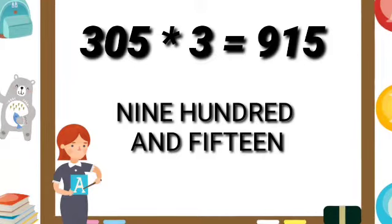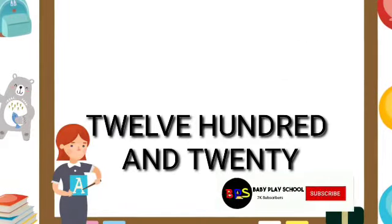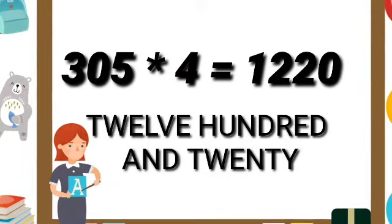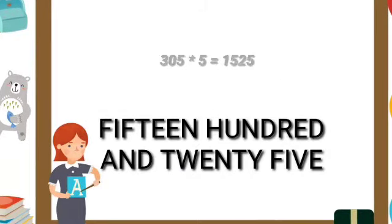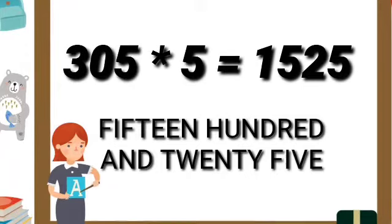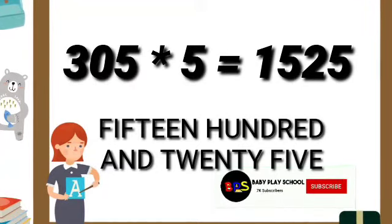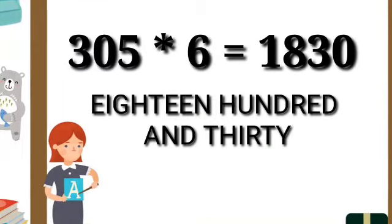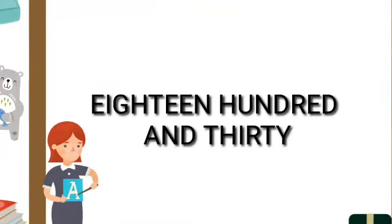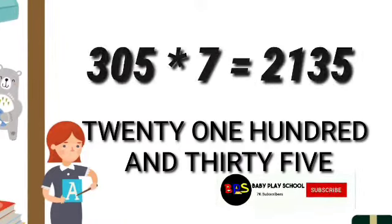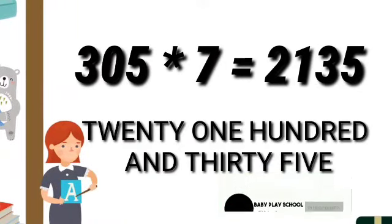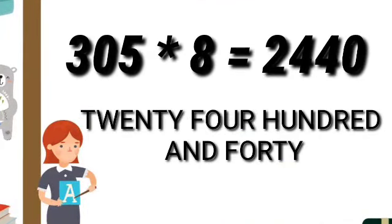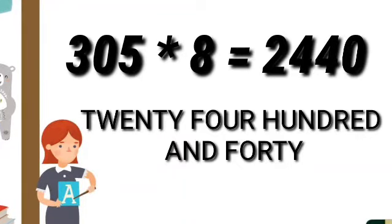305 fours are 1220. 305 fives are 1525. 305 sixes are 1830. 305 sevens are 2135. 305 eights are 2440.